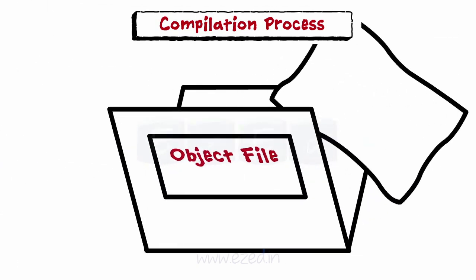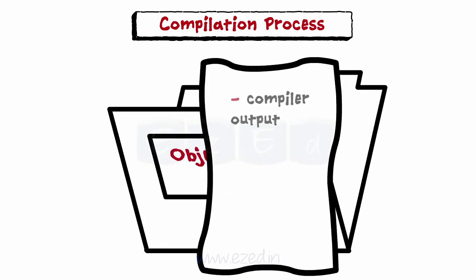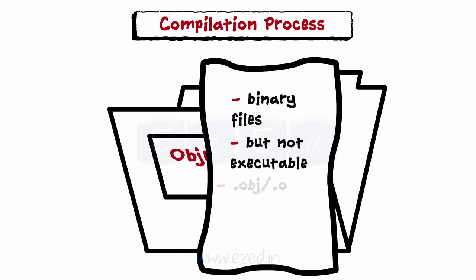Next is an object file. They are produced as an output of the compiler. They are binary files which are not executable by themselves. They have .obj or .o extension.